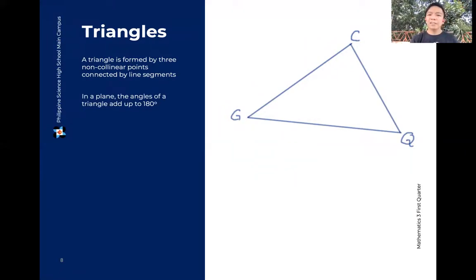But the sum of the angles in a plane, they add up to 180 degrees. There are some situations where you may have a triangle na hindi 180 degrees yung sum. Like for example, if you're measuring distance in a globe, dahil hindi siya flat na surface, hindi siya plane, hindi 180 degrees yung measurement niya. But now, in our class, we're only talking about triangles in a plane. So the angles will add up to 180 degrees.